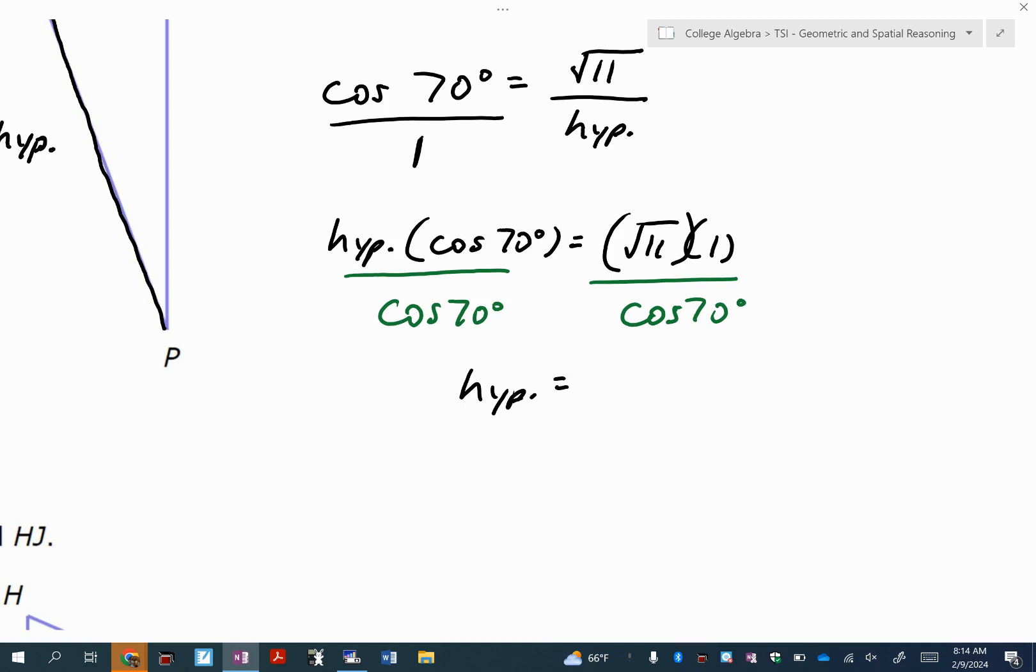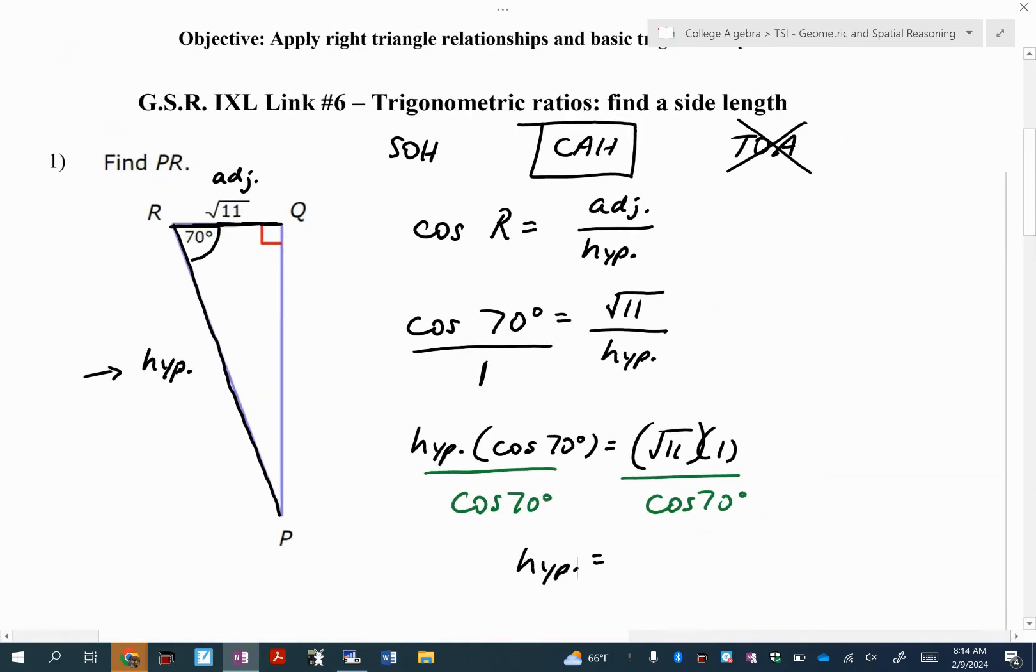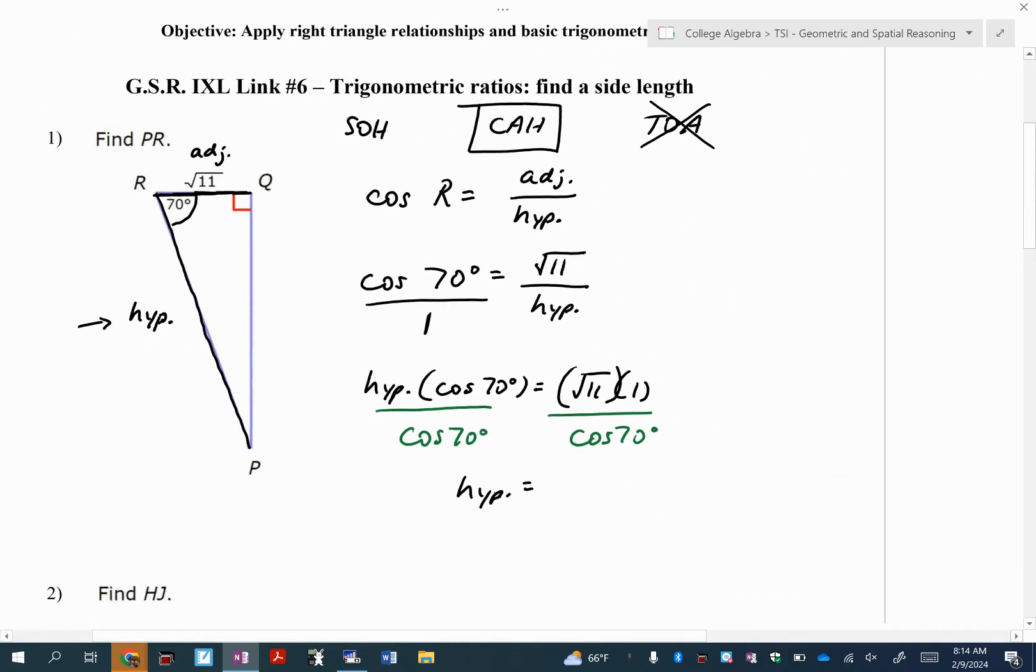So hit N over D. And then do you see how it says the square root of 11 times one? What is the square root of 11 times one? Just the square root of 11. So put that in the numerator and then put cosine of 70. And if you're in degrees it should give you the answer. My answer is 9.697. It doesn't say anything, so I'm going to round to the nearest tenth for 9.7.